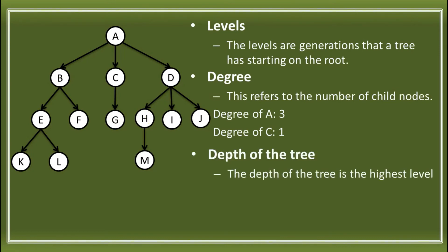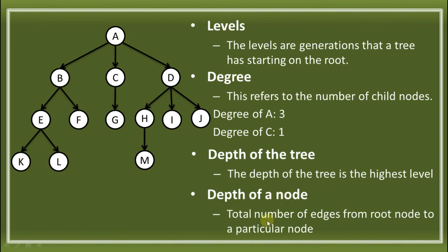Next, we have the depth of the tree. The depth of the tree is the highest level. In our example, the depth of the tree is 4 — because it has levels 1, 2, 3, and 4. We also have the depth of a node, which is the total number of edges from the root node to that particular node. The depth of G is 2 — counting from the root: first edge, then second edge. The depth of M is 3 — edges 1, 2, then 3.